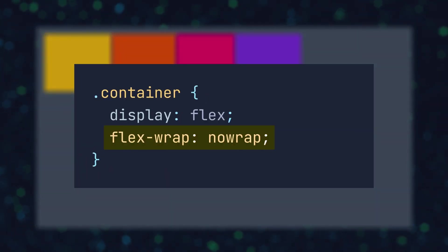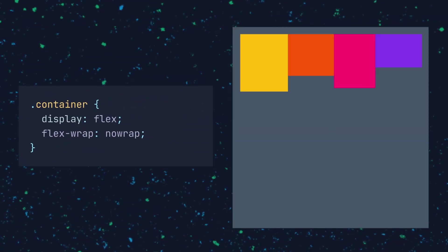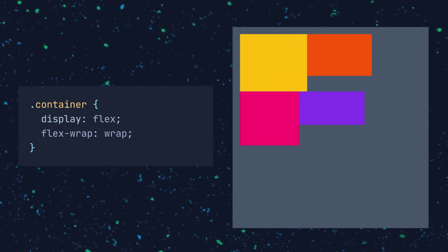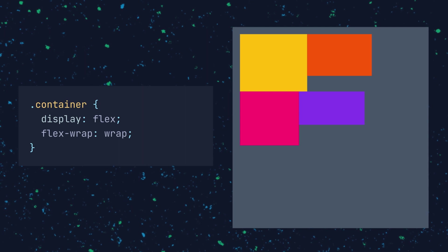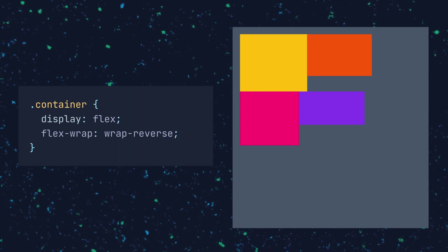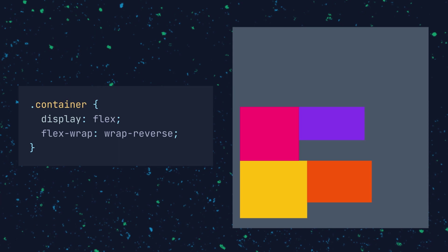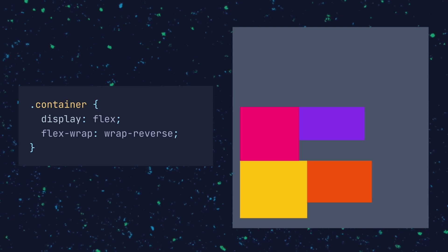One more alignment property can be placed on the flex container, but before we discuss that, we need to talk about flex-wrap. Flex items have a default value for flex-wrap set to no-wrap, which means the items will adjust their size to try and fit into one line. You can change that behavior by setting the value to wrap, which will wrap the items onto multiple lines from top to bottom. The wrap-reverse property will wrap the items onto multiple lines from bottom to top.